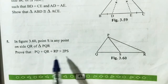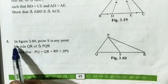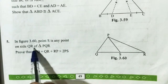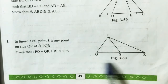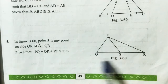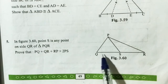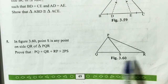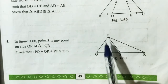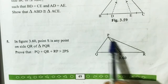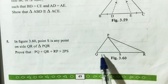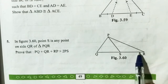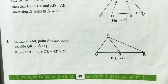Question number 5, second video. In figure 3.60, point S is any point on side QR of triangle PQR — it is not the midpoint. We need to prove that PQ plus QR plus PR is greater than twice PS.